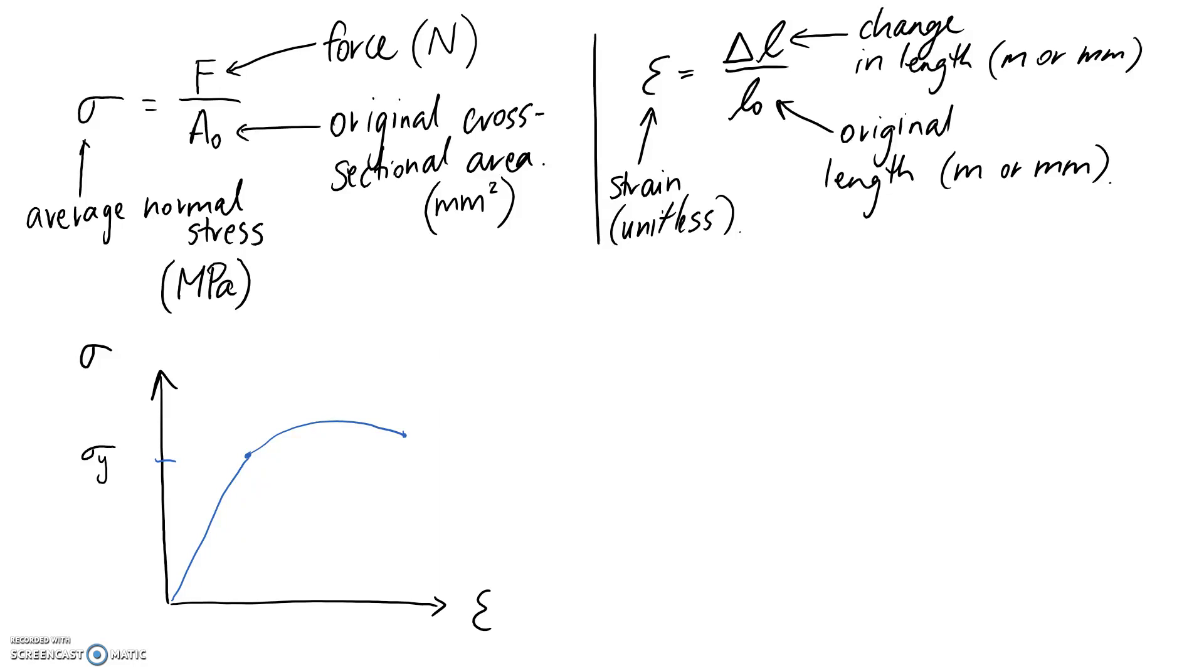Another point of interest that we tend to have is the one at the top here, the maximum value that we get out. This one is known as the ultimate tensile stress or ultimate tensile strength, so this one gets the little symbol like this: UTS.